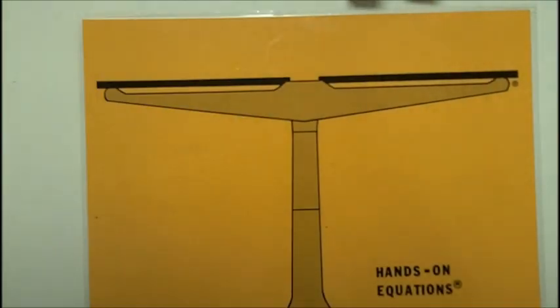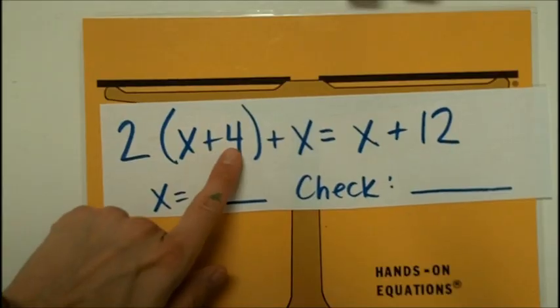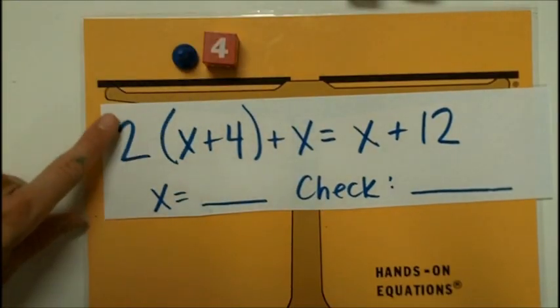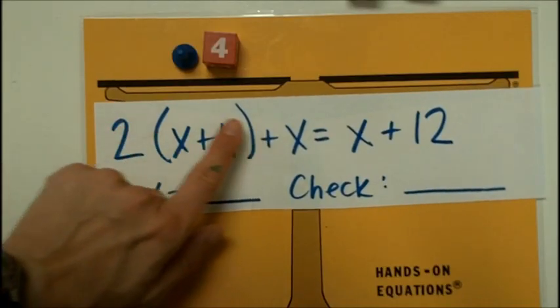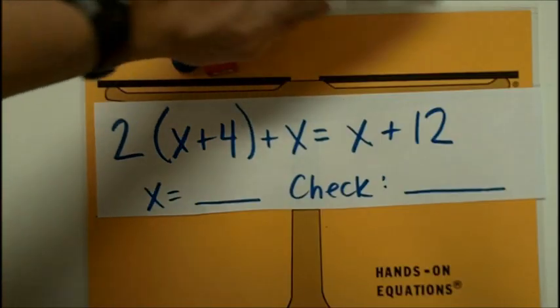My last practice problem. I'm going to do x plus 4. And then I'm going to go back, and this 2 tells us to double everything that's inside the parentheses. So we're going to have another pawn and another 4.